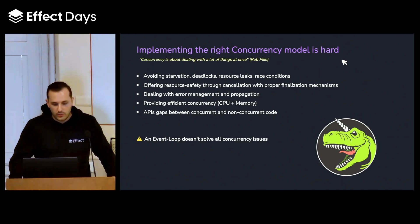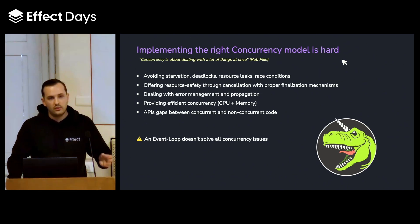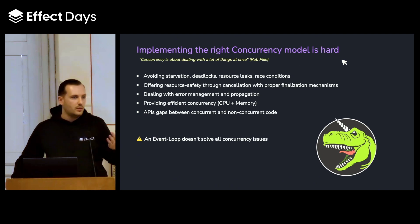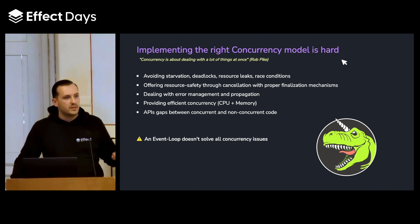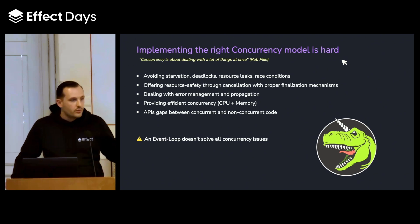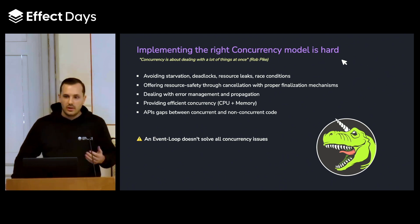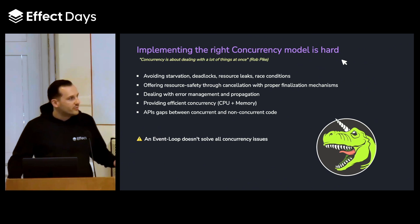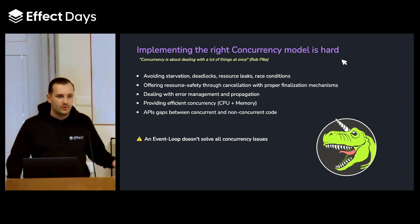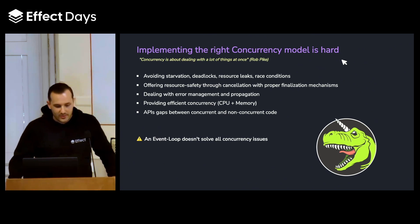Why do we need to care about concurrency? The issue is that concurrency is quite complex, and other speakers today showed how complex it is to get it right. Even though in JavaScript we have the event loop model that provides good abstractions over concurrency, we still have many challenges left to us.